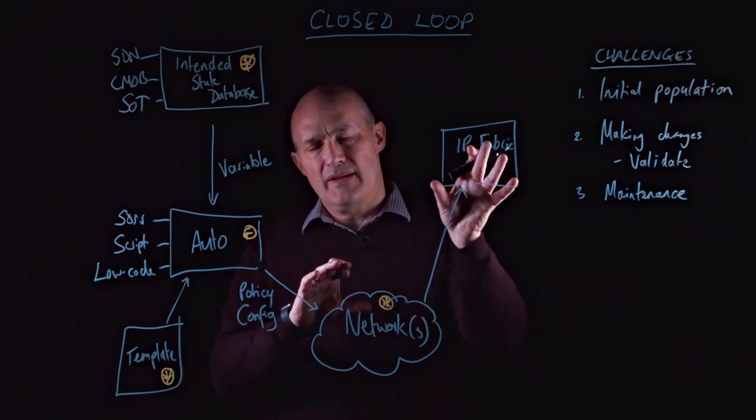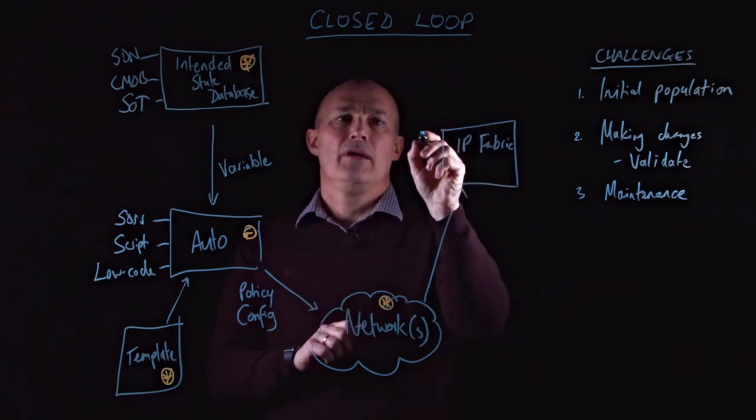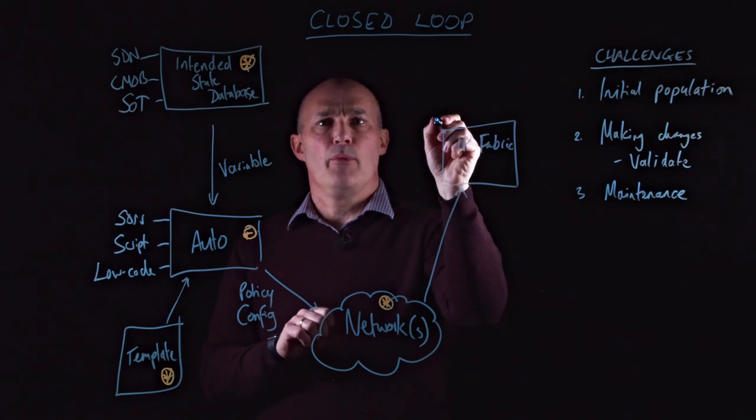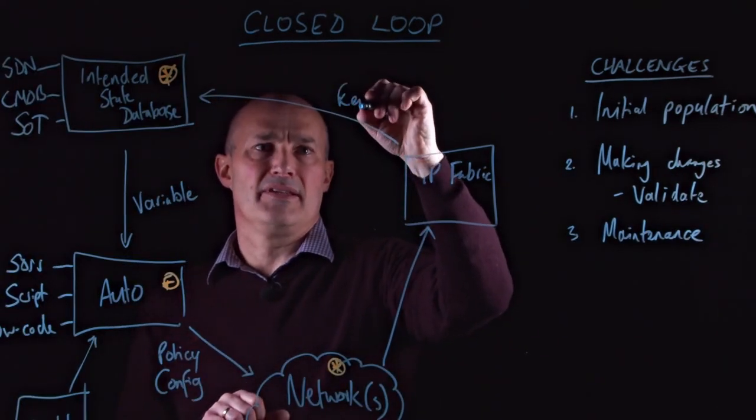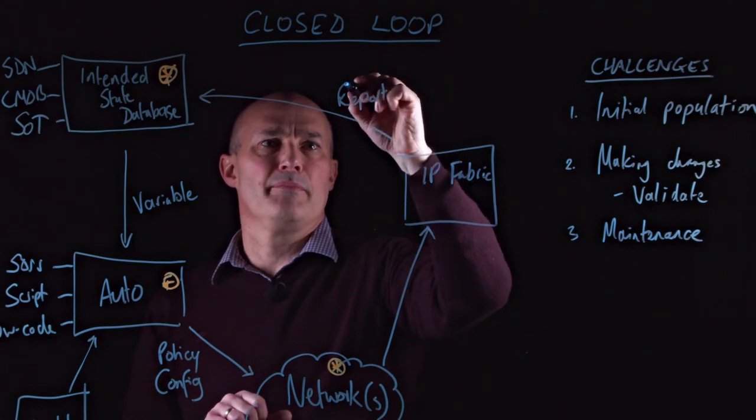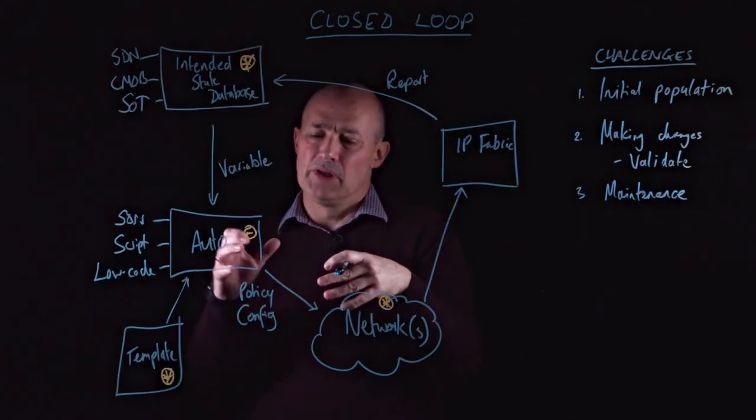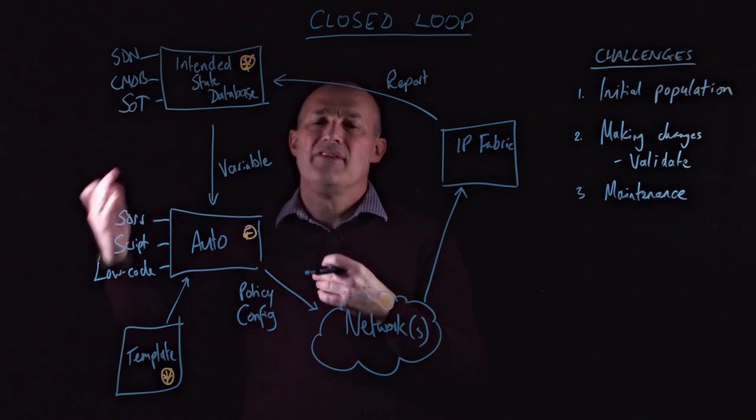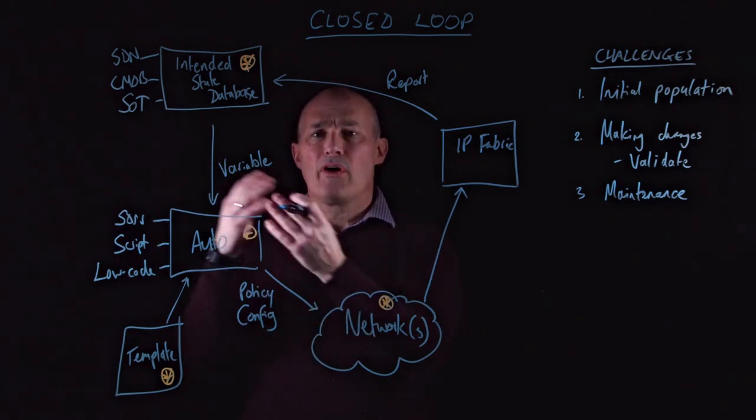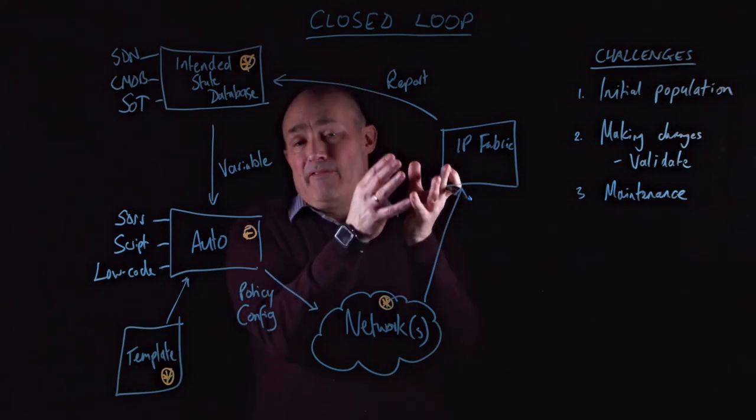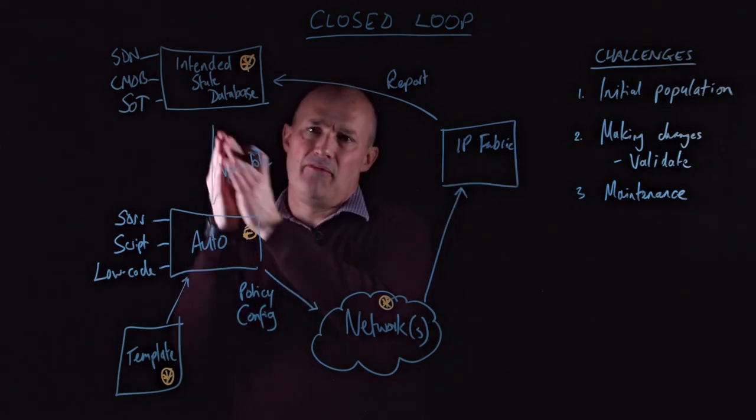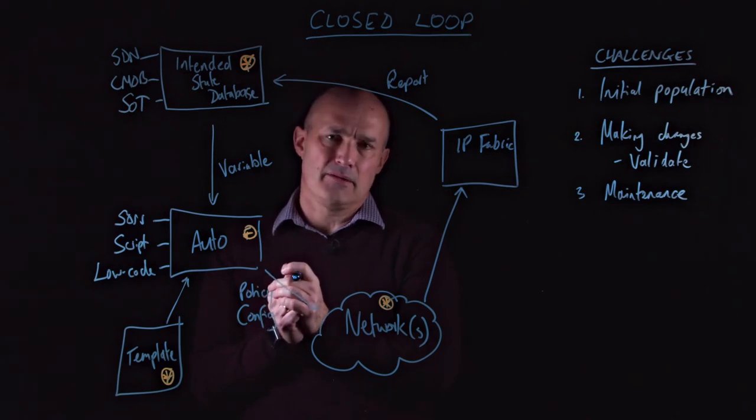And then we can use the information that's in IP Fabric to report back whether or not we want to make changes into the intended state database here. So we may want to, for example, look and see which new devices have been added to the network or what configuration has been changed in the network and say, actually, when I've got that data, I want to push that information back into the intended state database.